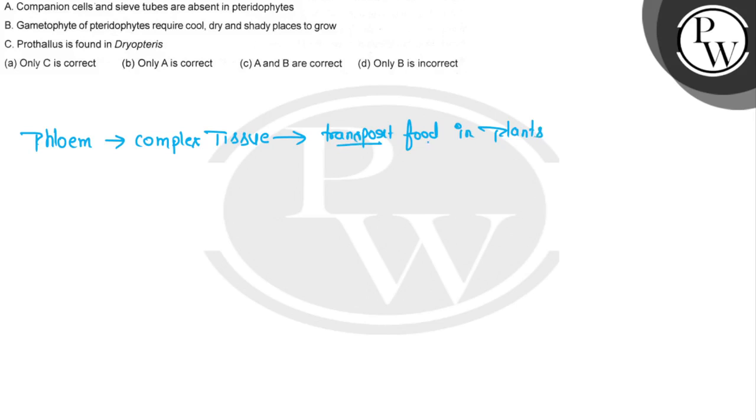Phloem transports food in plants. If I talk about this complex tissue, it's a group of different kinds of cells. We divide phloem on this basis, so we get these types of cells like companion cells...